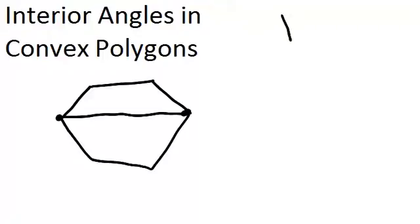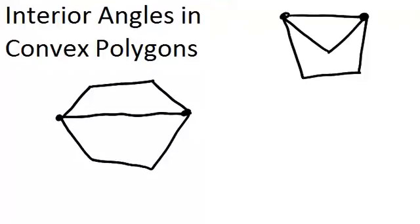An example that would not be a convex polygon is something like this, because if you take these two vertices and connect them, the diagonal leaves the polygon. So we're focusing on convex polygons, like this first one over here.